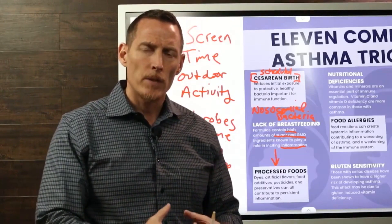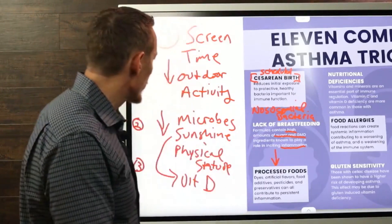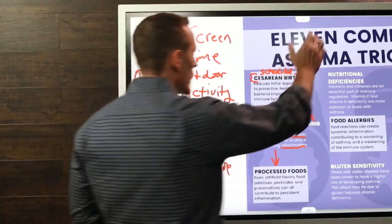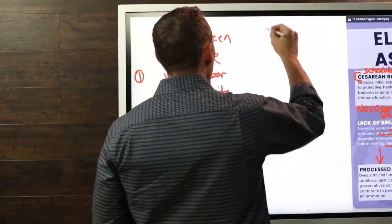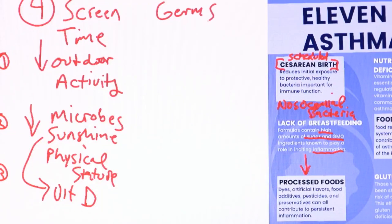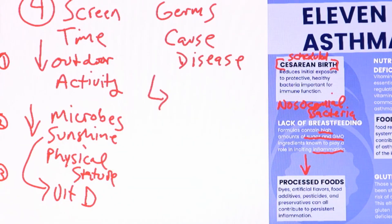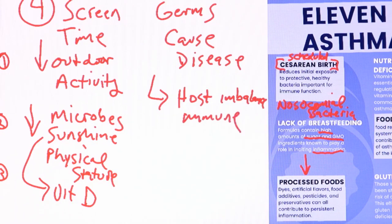There's a field of medicine and a theory called the germ theory of disease — meaning that germs cause disease. This is partially true and partially untrue. Germs don't really cause disease; it's more like host imbalance. You are the host. Host immune imbalance is what actually causes the disease — the germ is more of a contributing factor.